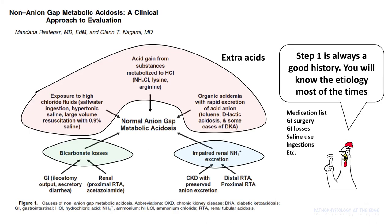Step one in evaluating a non-anion gap acidosis is to get a good history — you'll know the etiology most of the time. If you look at your medication list, ask about GI surgery and GI losses, look for normal saline use, and look for ingestion history.